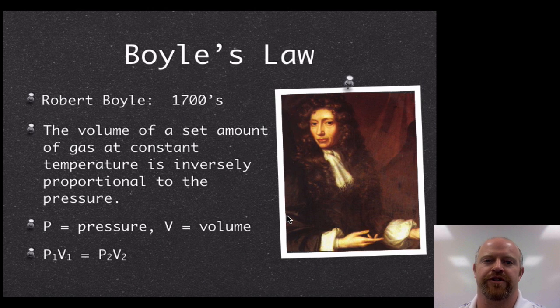In Boyle's research, he was able to find out that the volume of a set amount of gas at constant temperature is inversely proportional to pressure. So we have an inverse relationship here. When we label this stuff and do some equations, we use P for pressure and V for volume, and we get this nice relationship where the initial pressure P1 times the initial volume would equal any change in pressure or new pressure times its resulting volume.